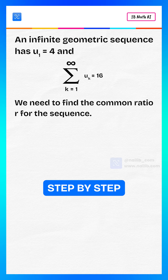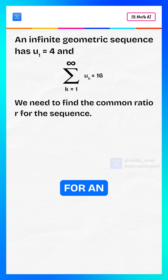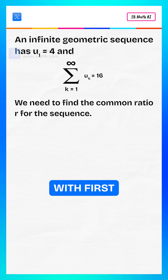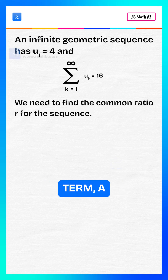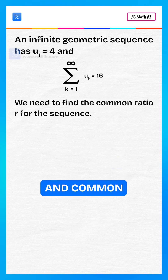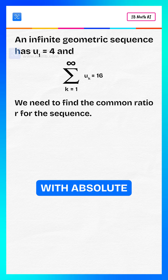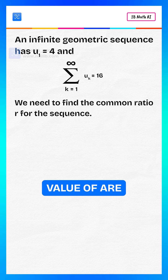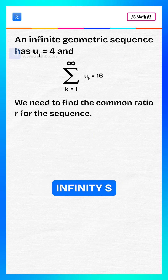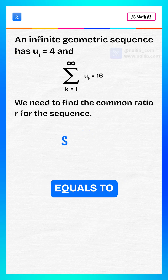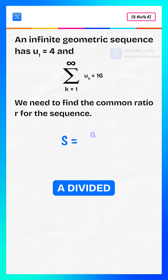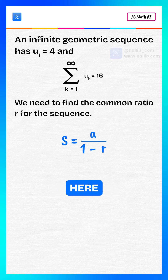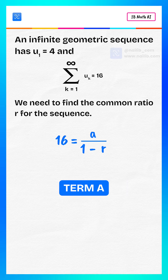Let's solve step by step. For an infinite geometric series with first term a and common ratio r, with absolute value of r less than 1, the sum to infinity s equals a divided by 1 minus r. Here, the sum s is 16 and the first term a is 4.